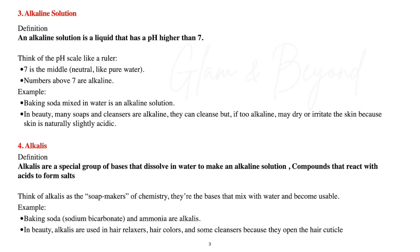Number three, alkaline solution. An alkaline solution is a liquid that has a pH higher than seven. Think of the pH scale like a ruler — seven is neutral, like pure water. Numbers above seven are alkaline. For example, baking soda mixed in water is an alkaline solution. In beauty, many soaps and cleansers can be alkaline. They can cleanse, but if they are too alkaline, they may be very drying or irritate the skin because the skin is naturally slightly acidic.